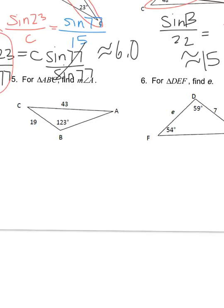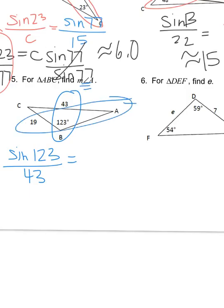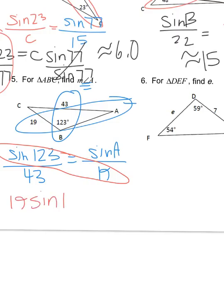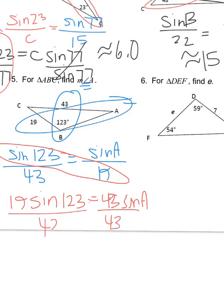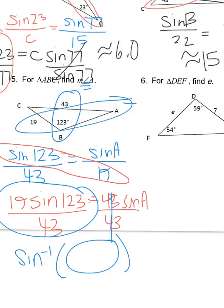For the next law of sines problem, set up the cross-multiplication: 123 matches up with 43, so sine of 123 is to 43 as sine of angle A is to 19. Cross multiply: 19 sine of 123 equals 43 sine of A. Divide both sides by 43. Since you're finding an angle, do sine inverse of all of this. The answer is about 22 degrees.